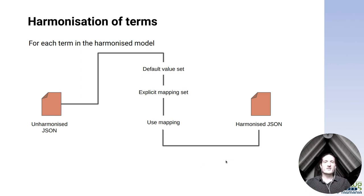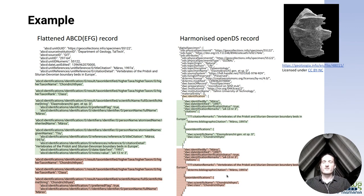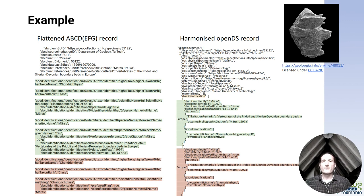To give an example, here's a fossil specimen from the collection at Teltec in Estonia. On the left, the flattened ABCDEFG record and on the right, the harmonized open digital specimen record. You may notice, for example, that there's room for multiple identifications with their relevant references as well.